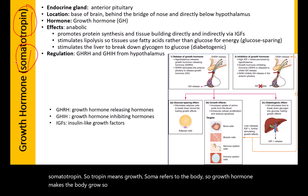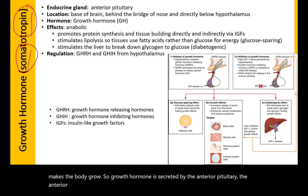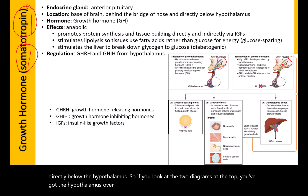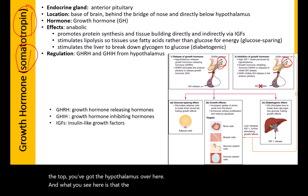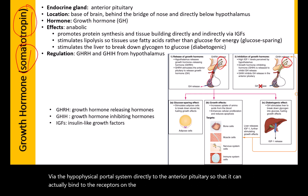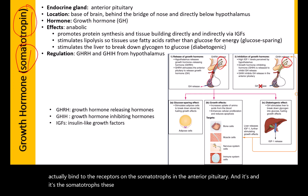Growth hormone is secreted by the anterior pituitary, which is located at the base of the brain behind the bridge of the nose and directly below the hypothalamus. The hypothalamus releases two hormones that travel via the hypophysial portal system directly to the anterior pituitary to bind to receptors on the somatotrophs, and it's these somatotrophs that actually release the growth hormone.